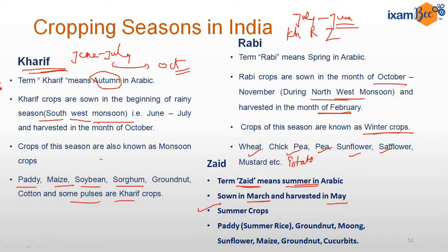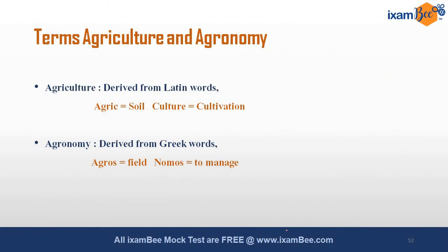Zayed crops are also known as summer crops. Common examples of Zayed are cucurbits — members of family Cucurbitaceae, like all melons and gourds — then some pulses like moong, groundnut, sunflower, and maize, which can also be grown in Zayed season. Summer rice or paddy is also grown in the Zayed season.